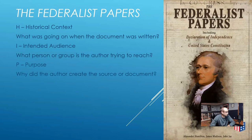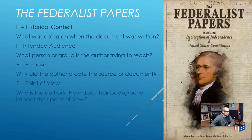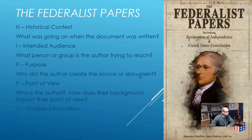The first P stands for purpose — why did the author create the source or document in the first place? The second P is point of view. Who is the author? How does their background, their gender, their race, their political party impact their point of view? All of these things need to be taken into account when looking at old documents, and really even new documents. And lastly is outside information — is there anything we can find, any outside information we can connect to the document? Are other people writing similar things, or maybe the complete opposite? We can use that outside information to gain a better understanding of what we're studying.